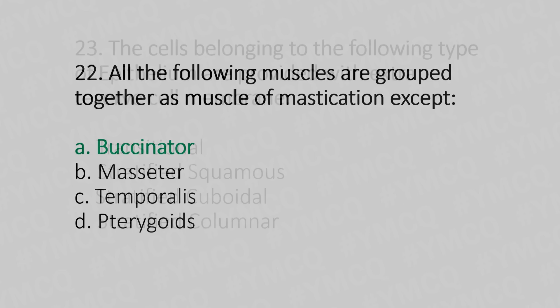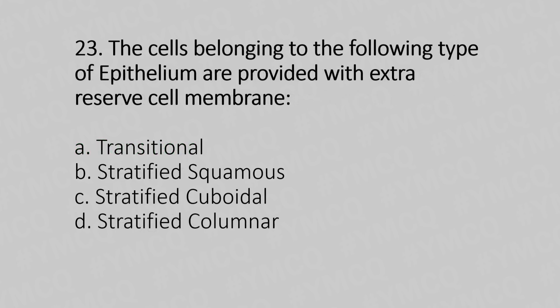Now let's move to question number 23. The cells belonging to which type of epithelium are provided with extra reserve cell membrane? Option A: transitional. Option B: stratified squamous. Option C: stratified cuboidal. Option D: stratified columnar. And the answer is Option A — transitional.